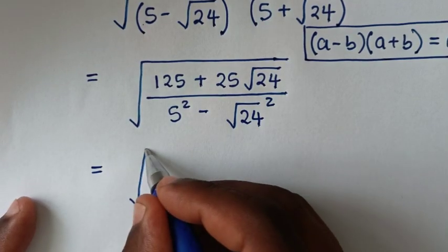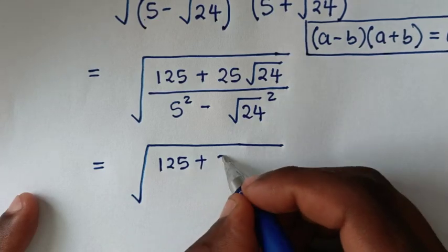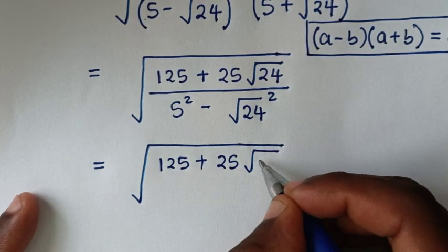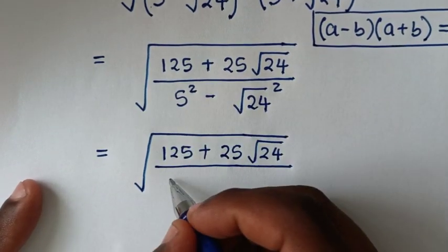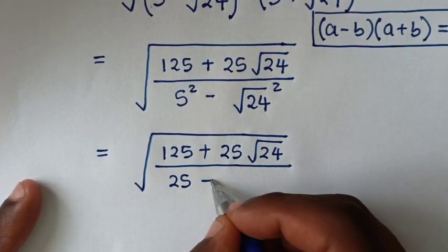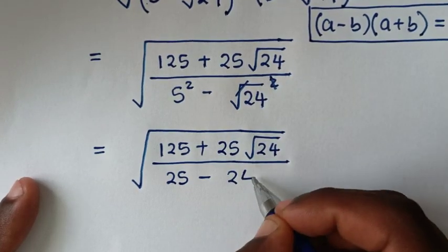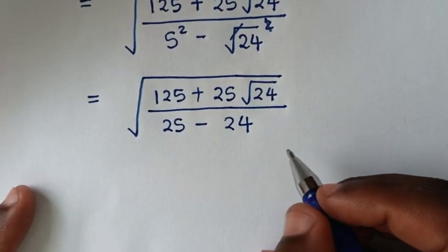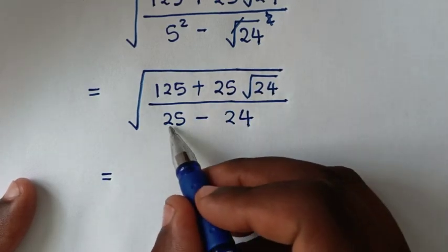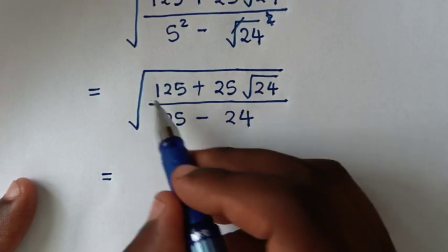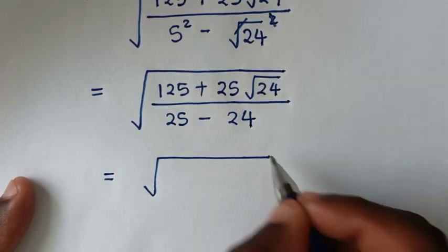So it will be equal to (square root of 125 plus 25 square root of 24) over (5 squared minus (square root of 24) squared). Now 5 squared is 25, and (square root of 24) squared is 24, so the denominator becomes 25 minus 24, which equals 1.